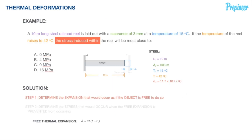Even if you work the problem to the end with the wrong coefficient, you might find that incorrect answer presented as an option — so be careful. We have everything we need. Plugging it all in, we find that if free to do so, the steel railroad reel would expand 0.0032 meters. We add that to our diagram as the free thermal expansion.